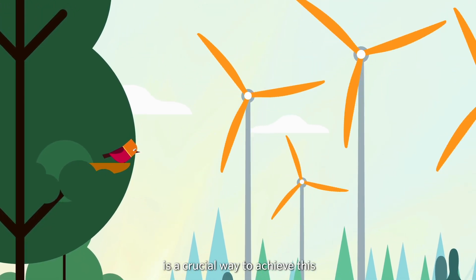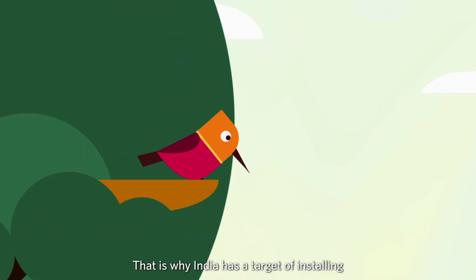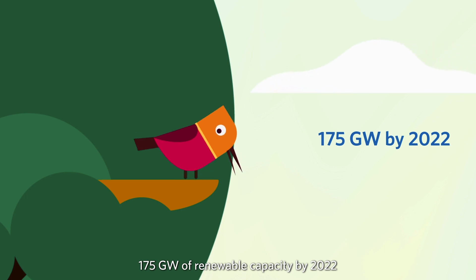like wind and solar power is a crucial way to achieve this. That is why India has a target of installing 175 gigawatts of renewable capacity by 2022.